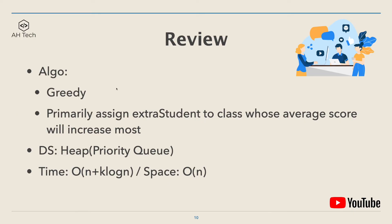Let's review. The main algorithm is a greedy approach — we primarily assign extra students to the class whose average score will increase the most. To achieve this, we use the heap or priority queue data structure. The time complexity of this approach is O((n + k) log n) for the heap, and the space complexity is O(n).